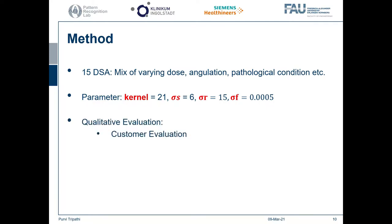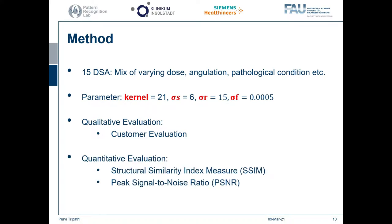For qualitative evaluation, we presented the results to four medical professionals and asked them to rank the techniques based on visual benefits. Quantitatively, we selected 10 high-dose images and added Gaussian and Poisson noise to them before filtering. We then compared the results with the original images using two metrics: Structural Similarity Index Measure (SSIM), which is relevant for structure preservation, and Peak Signal-to-Noise Ratio (PSNR) for the measurement of noise reduction. The final comparison was the average of the 10 readings.